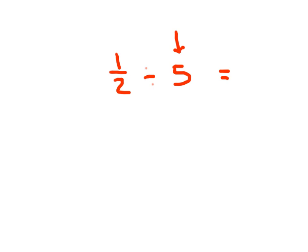So we have 1 half divided by 5. What we can do is we can write this as a multiplication problem, where we have 1 half times 1 fifth. So we've rewritten divided by 5 as multiplying by 1 fifth, where we place that 5 into the denominator.